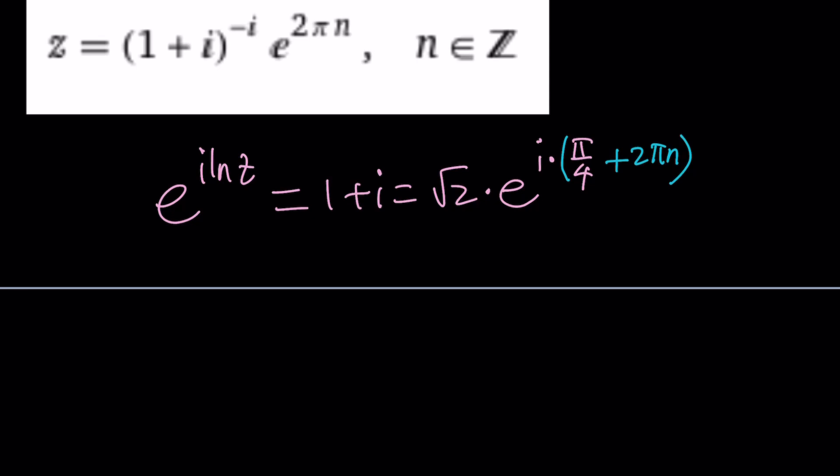Now we have this equation. This equals that. And then we're going to go ahead and use the logarithm on both sides. Right. So this is going to become i ln z equals, now if you ln the right hand side.